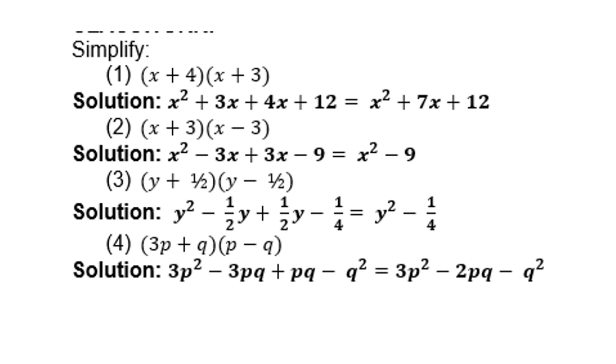Number 3, (y + ½)(y - ½). So y times y is y². Y times negative ½ is negative ½y. ½ times y is positive ½y. And ½ times negative ½ is negative ¼. Then the two in the middle will cancel. And the answer is y² - ¼.